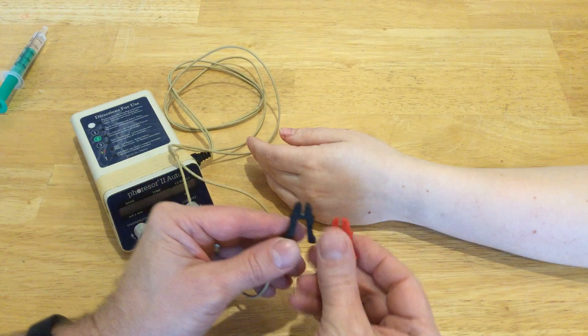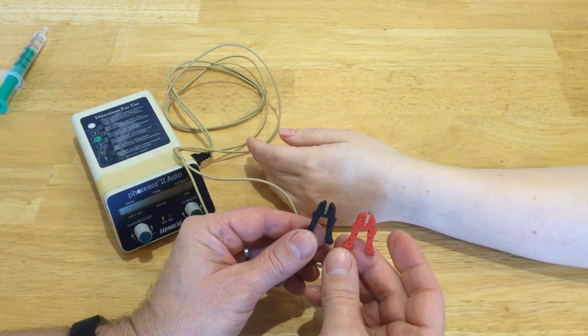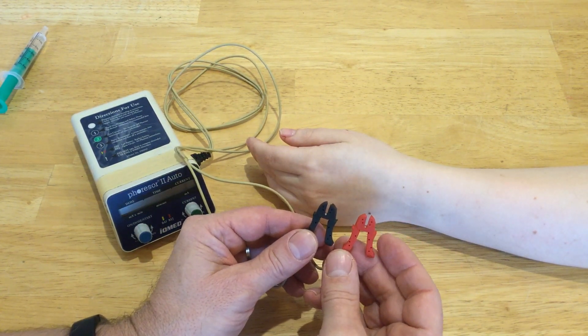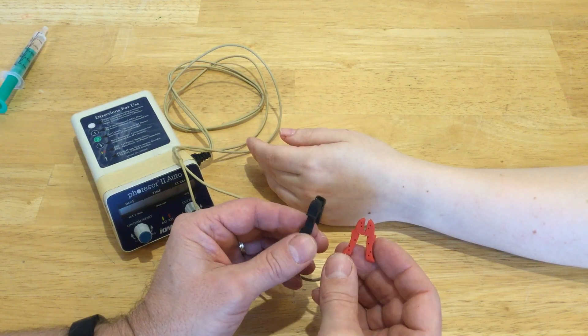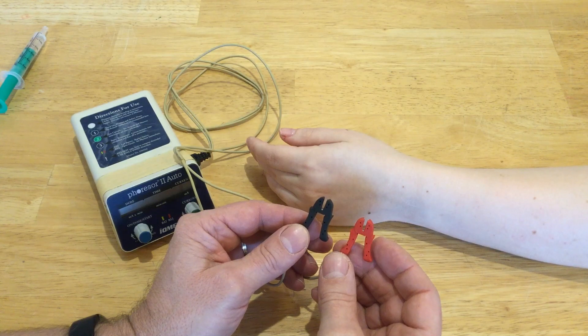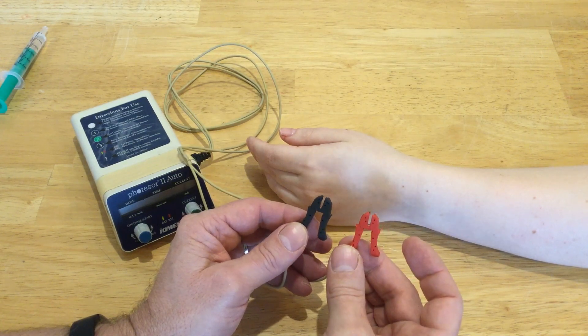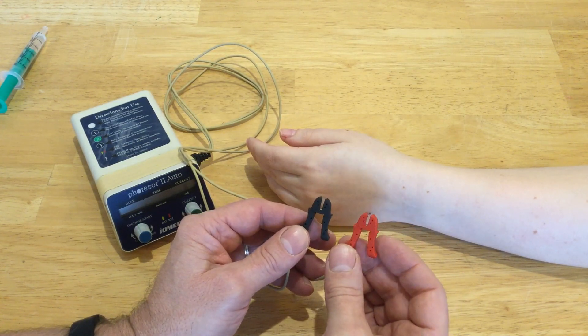Iontophoresis uses direct current. The black lead wire is the cathode or negative electrode, and the red lead wire is the anode or positive electrode.